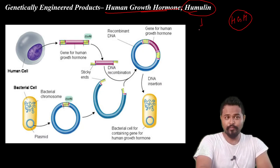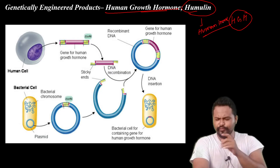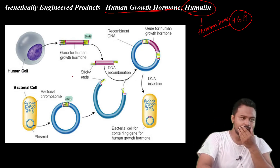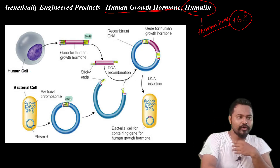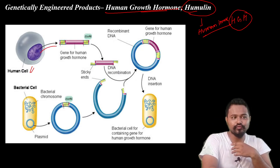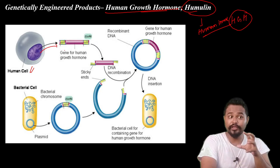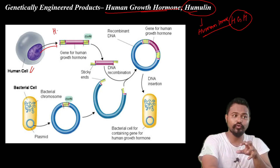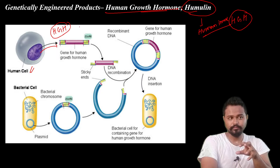So what do we mean? I will revise it. You take the human cell and identify the gene of interest — human growth hormone. You isolate the human growth hormone gene.